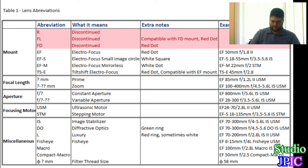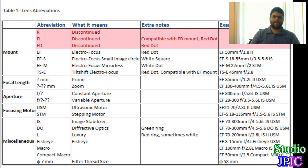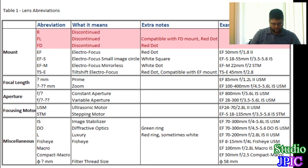The only DO lens is the 70-300mm f/4.5-5.6 DO IS USM. Then you have the L, or Luxury, lenses — identified by the red ring around the lens, and sometimes a white lens body. L lenses are the highest quality from Canon, offering better image quality, better weather sealing, and a more solid build. On the downside, they tend to be more expensive and heavier.